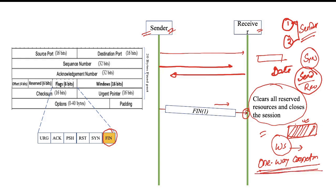As the next step of preparation, the sender sets up a sender window. Based on the information in the acknowledgement packet, the window size is 80 bytes, so the sender can send 80 bytes of data without waiting for acknowledgement or interruption. That is 10 blocks of data, from address 4000 to 4072. Once this acknowledgement is received and the sender window is prepared, the connection establishment phase of TCP is complete.